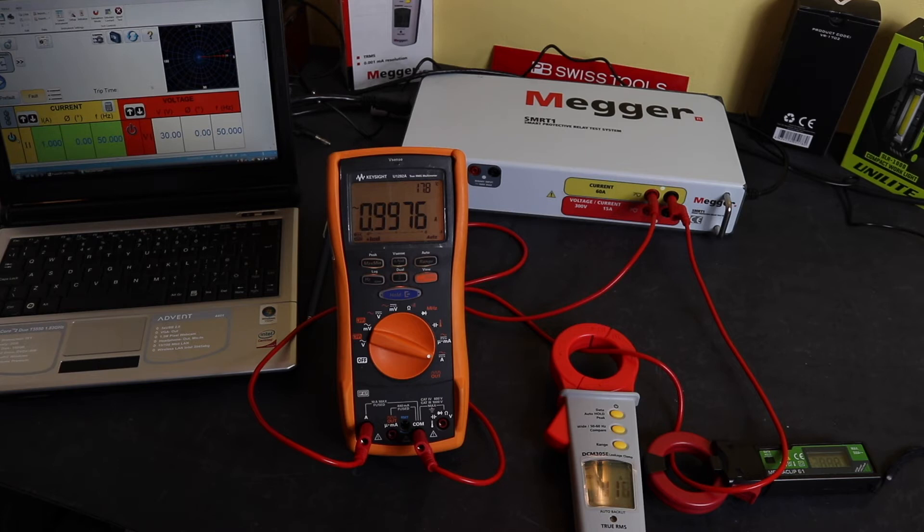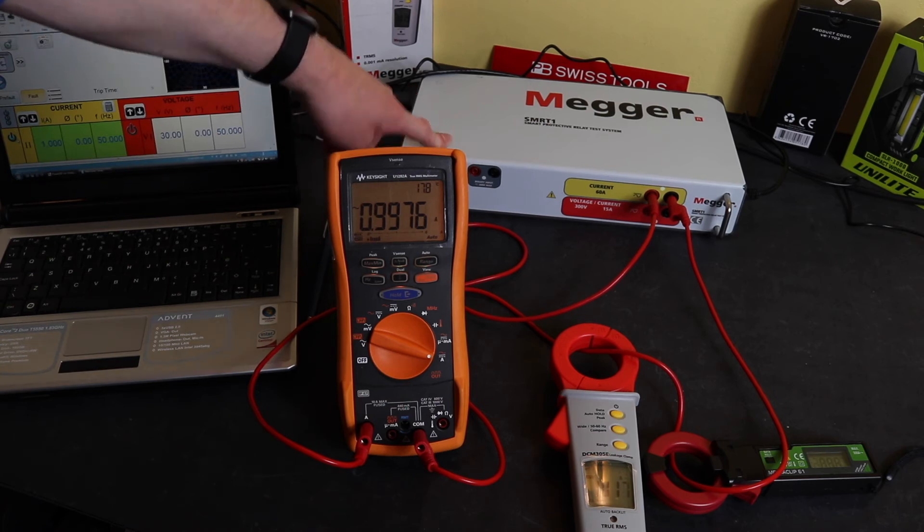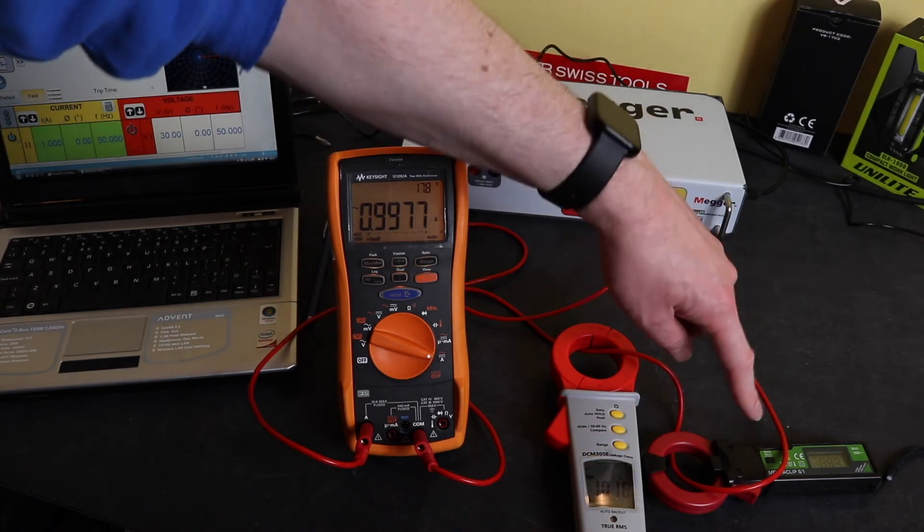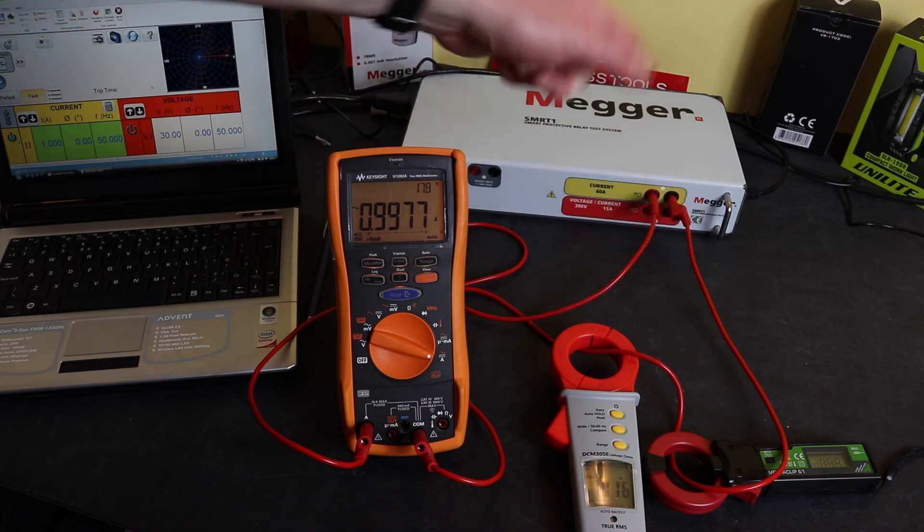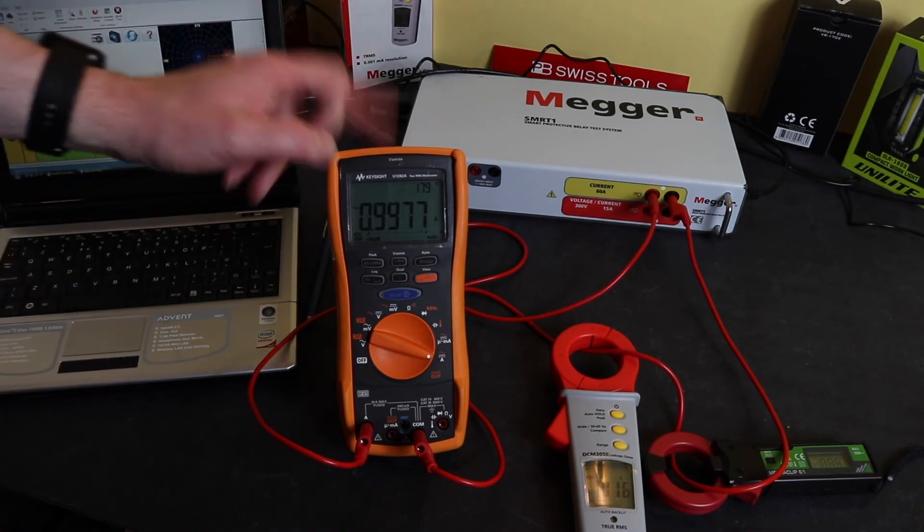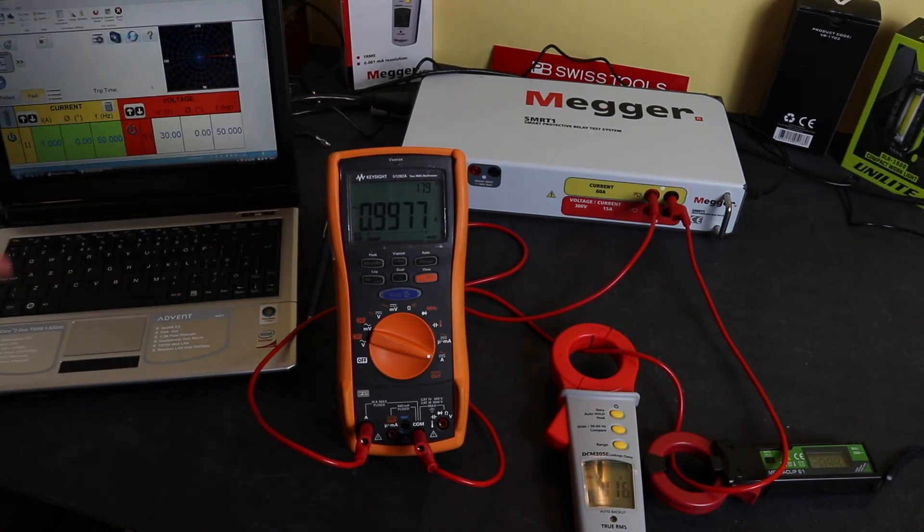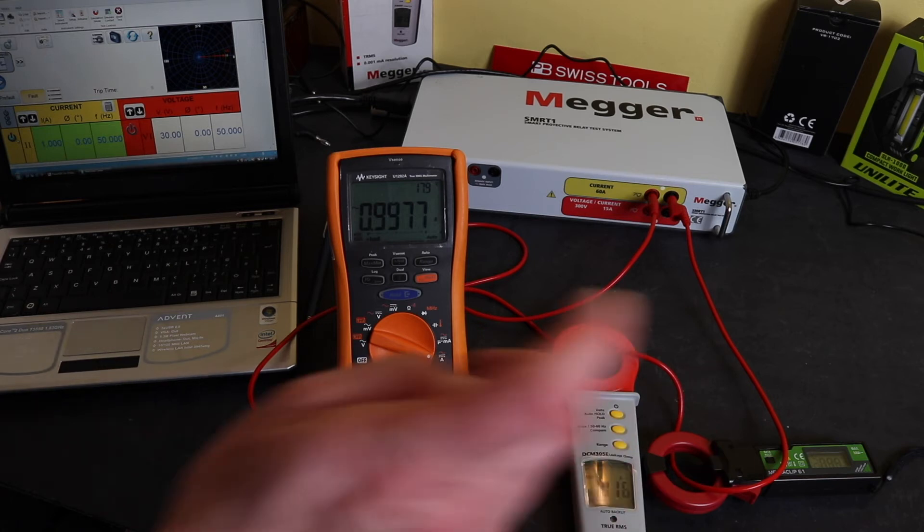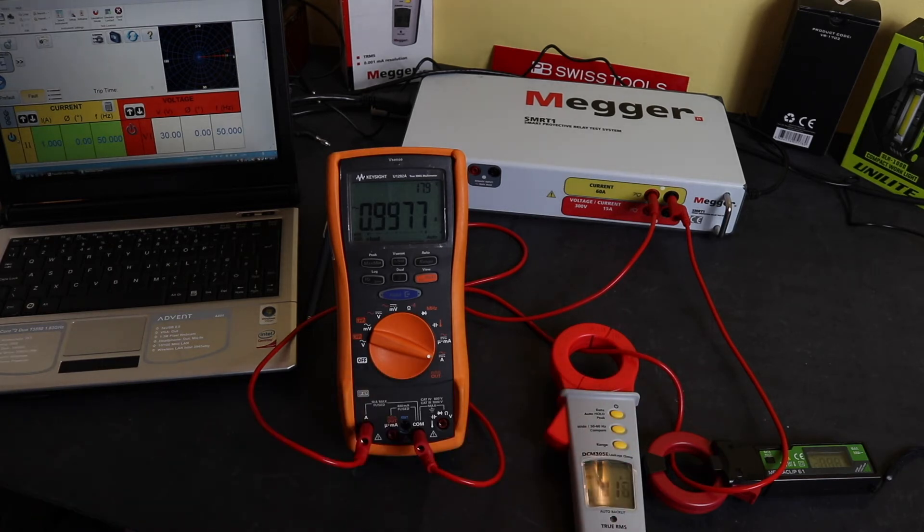So this is the test setup for 10 amps down to around about 100 milliamps. I'm still using the SMRT in current mode. I've got a lead coming straight out going through both the current clamps through an ammeter and then back into the test set. I'm just using the ammeter as a cross reference for the current that I'm putting in which is 1 amp at the moment and we're 0.9977, 1.016 on Megger and 0.96 bouncing around a bit on the Metrawatt there. So I'll use this test setup now until we get down to the really low milliamps.